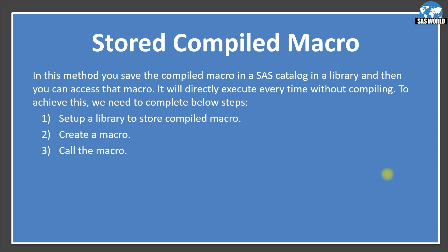If we save the compilation part in a permanent location, then the next time we call that particular macro again, it will not compile — it will directly execute. So the compilation time we can save. We'll use these three steps and discuss them one by one.